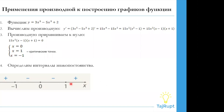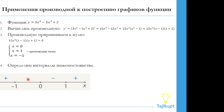Теперь нужно определить интервалы знака постоянства. Мы в этих промежутках берем любую цифру и подставляем в производную. Например, в промежутке от 1 до бесконечности возьмем цифру 2 и подставим в производную — в результате у нас будет положительное число, то есть ставим плюс. Итак, определяем каждый интервал. Определив знаки постоянства, мы определяем признак возрастания и убывания: там, где знак плюс, — функция возрастает, а там, где стоит знак минус, — это промежутки убывания.